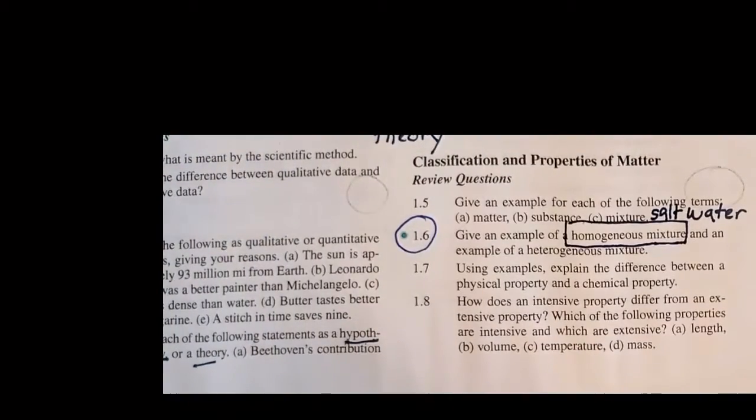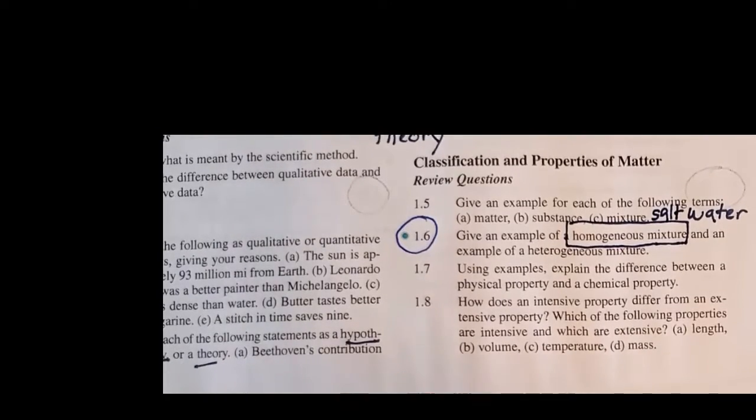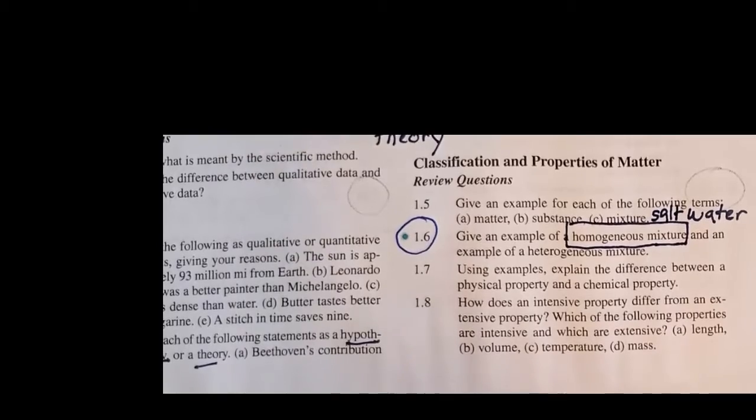The best example of a homogeneous mixture is salt water, also probably sugar water. You see, if I dump some sodium chloride in water and mix it, you still have water. You have no idea I added salt in it unless I label the solution, label the mixture, or you taste it and it tastes salty.